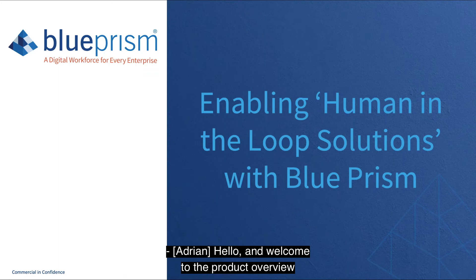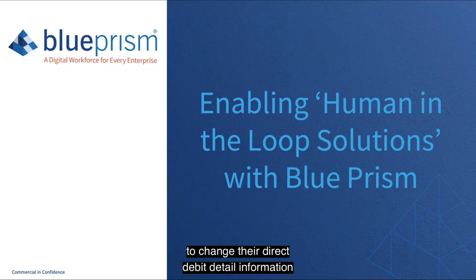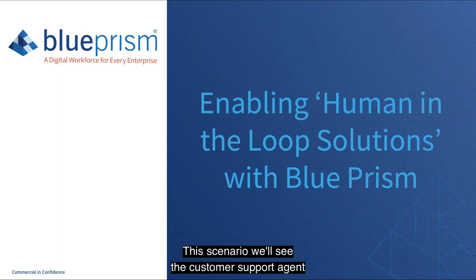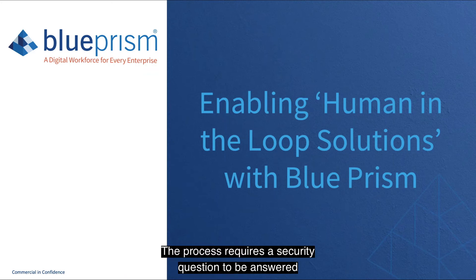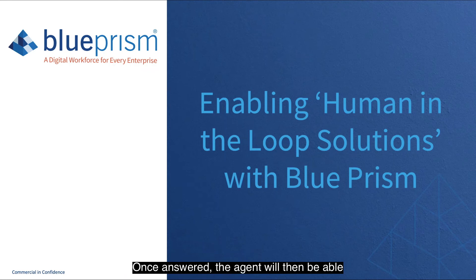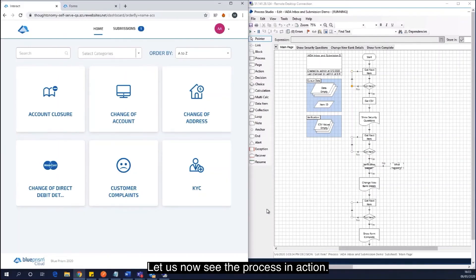Welcome to a product overview of the human-in-the-loop capabilities of Blue Prism Interact. In this demonstration we'll take you through a customer support scenario involving a customer request to change their direct debit detail information on their account. This process is supported by Blue Prism Digital Workers and Blue Prism Interact. The scenario will see the customer support agent initiate the process through the Interact user interface, providing the account number and sort code supplied by the customer, which then drives the process in Blue Prism. The process requires a security question to be answered, which will see Blue Prism prompt the agent to request this information from the customer.